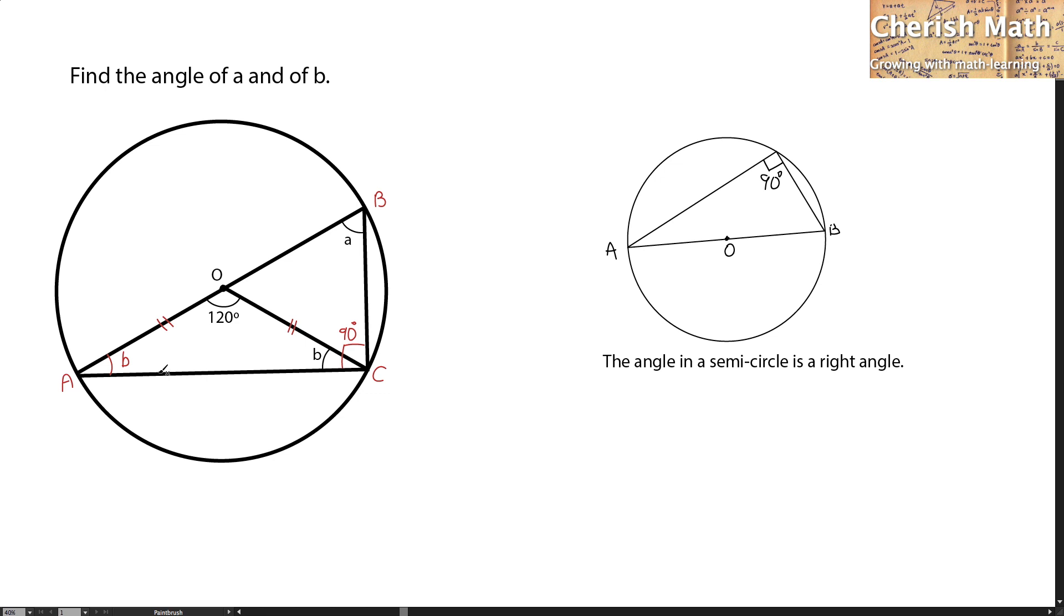Now, we are using the supplementary angles of a triangle that sums up as 180 degrees. Now, B here would be the result of 180 degrees minus 120 degrees of the angle here, and I'm going to divide by 2 because B stands for two parts here for a triangle. It has to be shared equally the same for the angle. That is the reason why it is divided by 2.